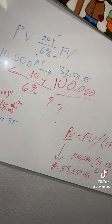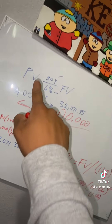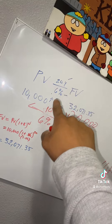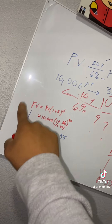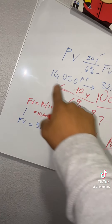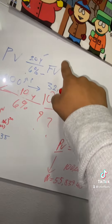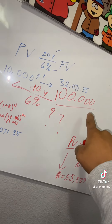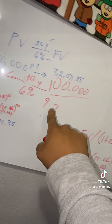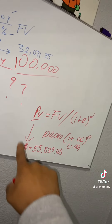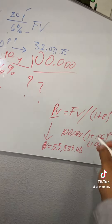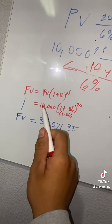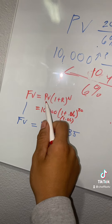I just showed you guys how to take present value to future value using 20 years and 6% with this equation. And I also showed you guys how to take a future value of $100,000 from 10 years at 6% using this other equation. The only difference is the division and the exponent.